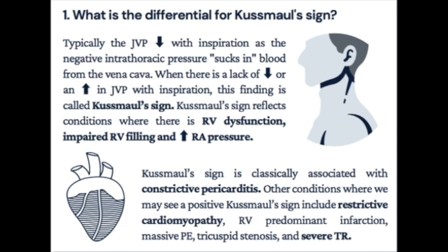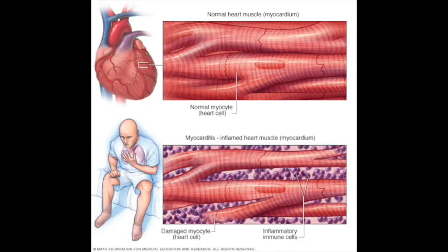Other etiologies include uremia and medications — importantly clozapine, methyldopa, antibiotics, isoniazid, cyclophosphamide, phenytoin, and indomethacin. Clinical manifestations: viral prodrome with fever, myalgias, and malaise for several days, followed by symptoms of systolic dysfunction — dilated cardiomyopathy. This goes almost hand-in-hand with dilated cardiomyopathy. Heart failure symptoms include dyspnea, fatigue, exercise intolerance, and S3 gallop.